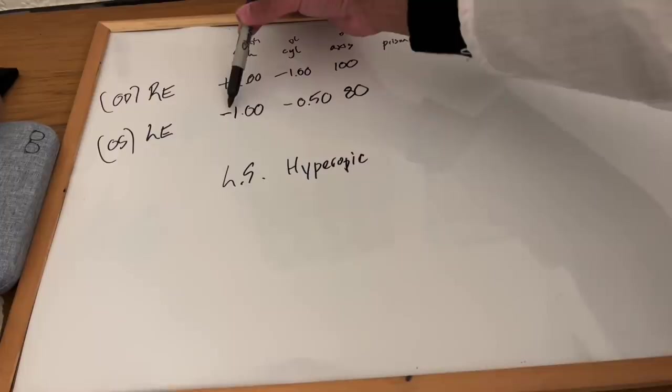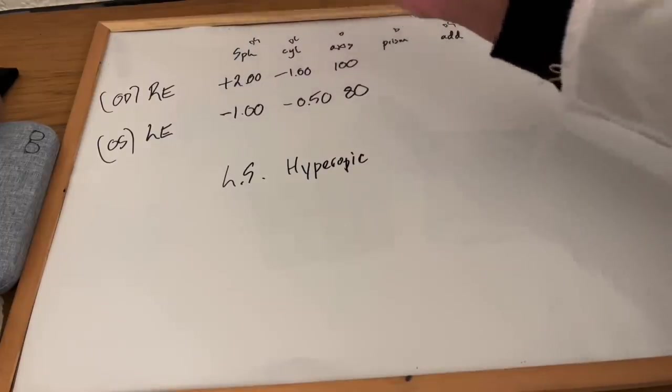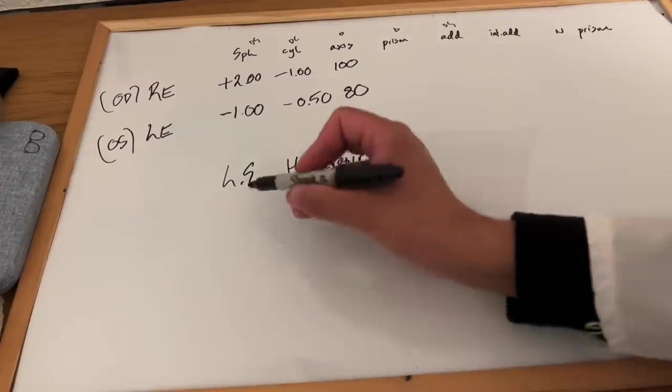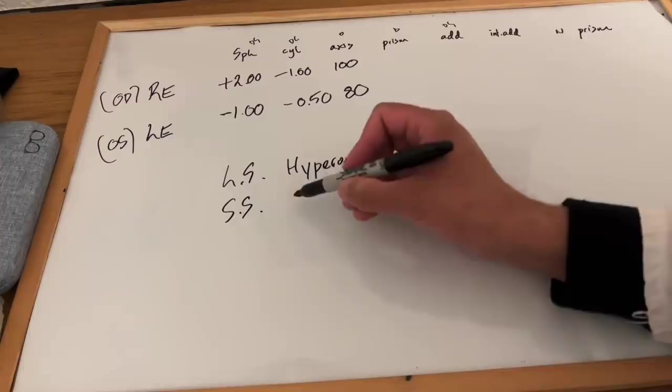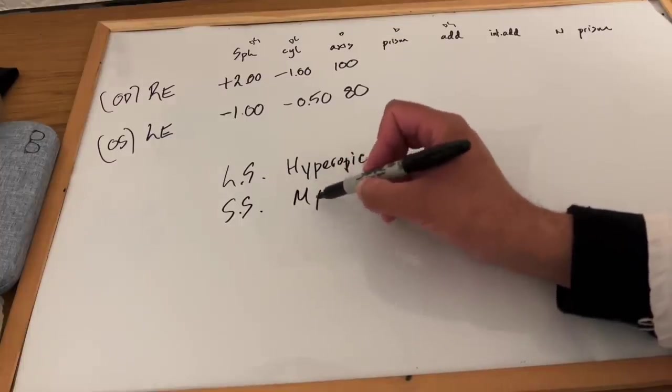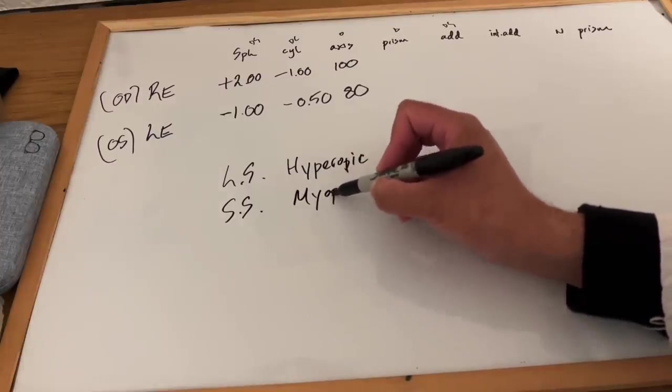Conversely, if you see a minus symbol before your sphere, opposite, you are short-sighted, you are myopic.